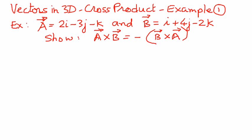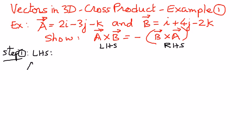So as step number one, we will take the left hand side — we'll call this one as the left hand side of the equation, and this one as the right hand side, LHS and RHS. The left hand side: we have vector A cross vector B. And to do that, we're going to write them out — 2i minus 3j minus k — in this manner.